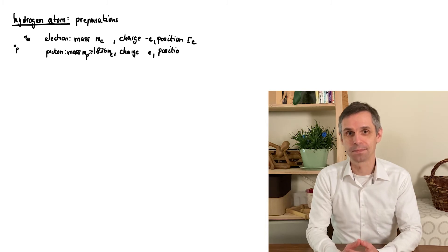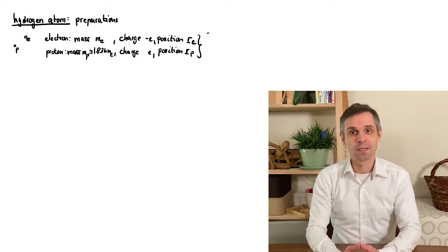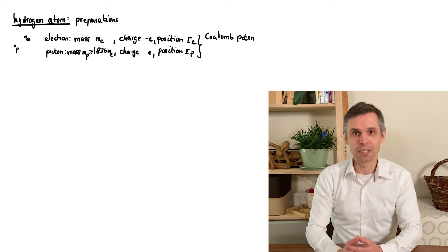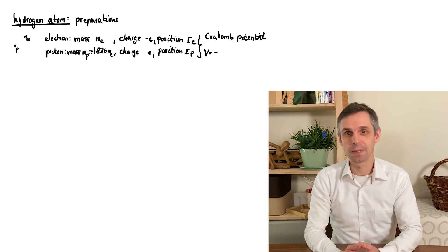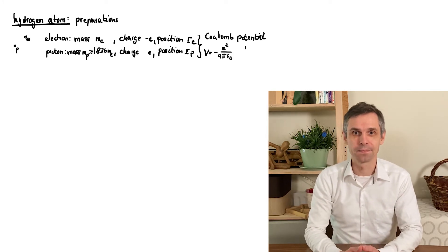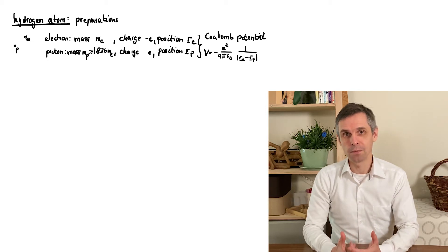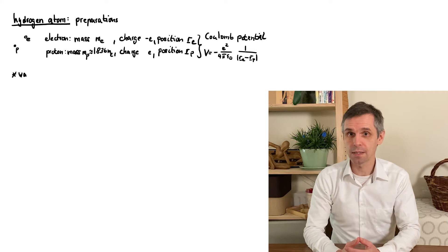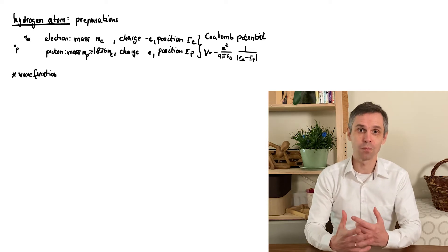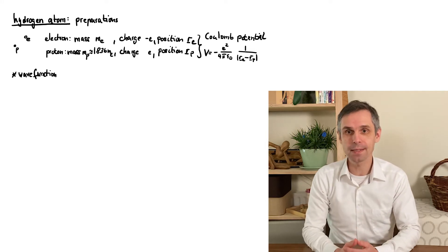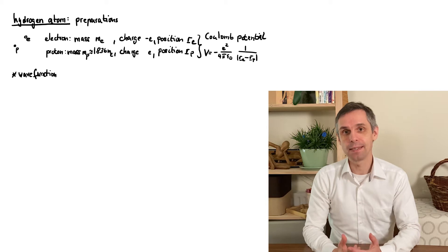So these two particles have opposite charge and attract each other by the Coulomb interaction. Now the wave function of this composed system really has to be a function of the positions of both particles, as we can measure these independently.